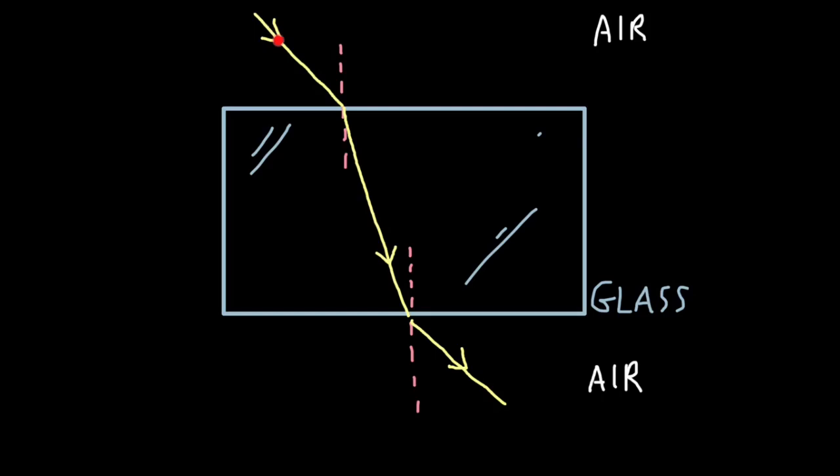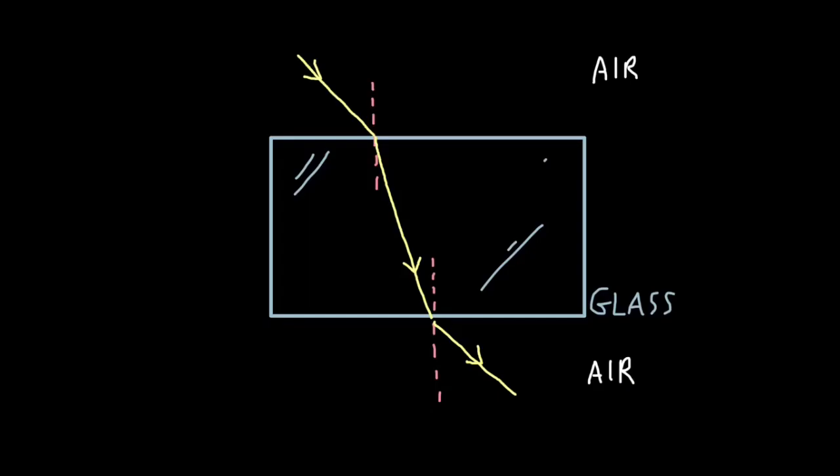So what happens as light travels forward? You can see that one side of light will encounter the glass before the other side. As a result, the light will bend towards normal in the more dense medium. When it's leaving the more dense medium, it will bend away from the normal.